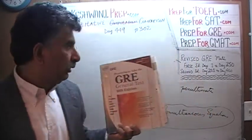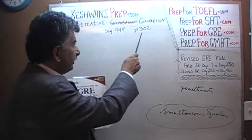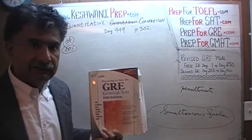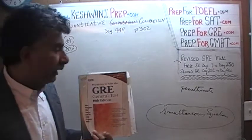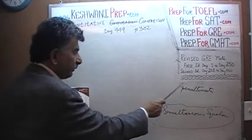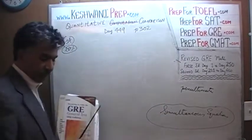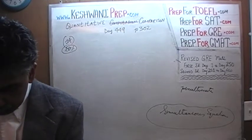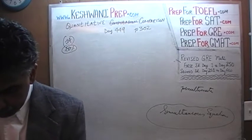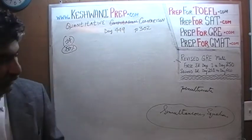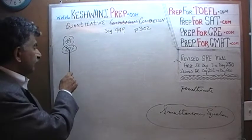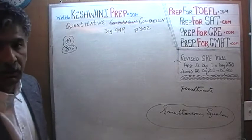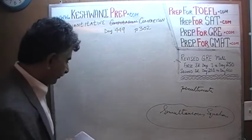Right now we are on page number 302, the second-to-last problem — problem number 14, the penultimate problem on the page. When this problem appeared in the exam, 60% of people had no trouble with it, while 40% got it wrong.